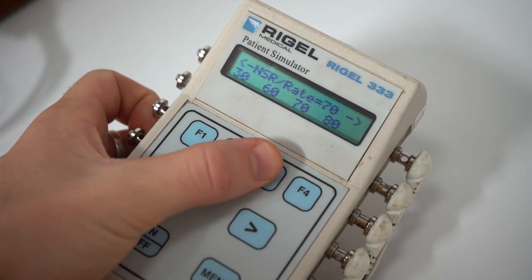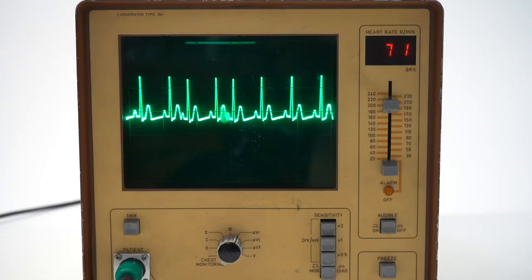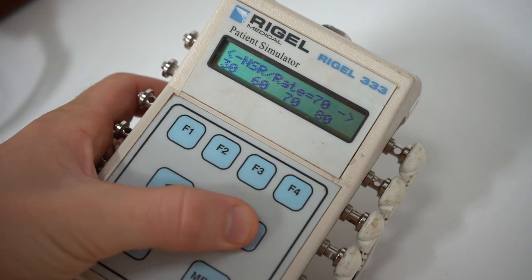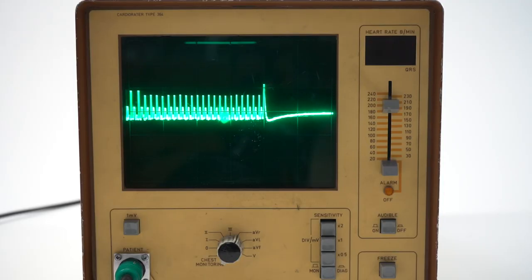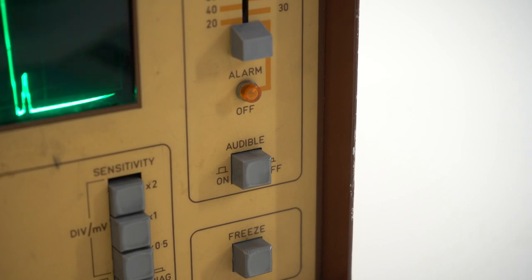From here, use the F buttons to select the heart rate, and the arrow buttons to navigate along the menu. To emulate a flatline, simply turn the simulator off. If you don't want the monitor to beep, simply press this button on the face of the monitor.